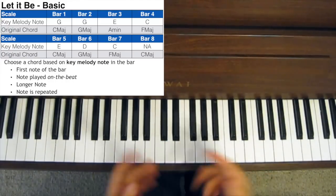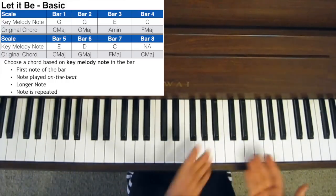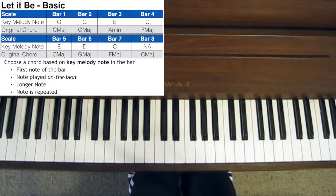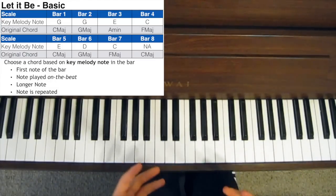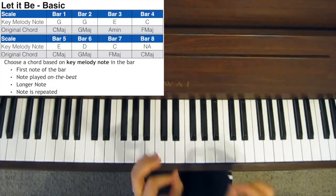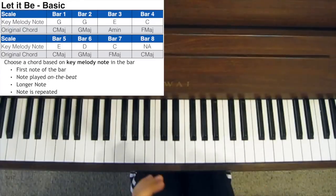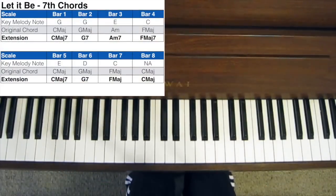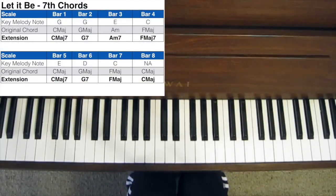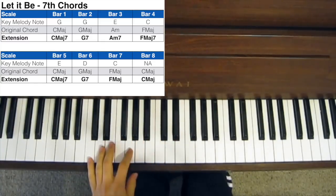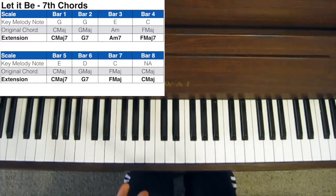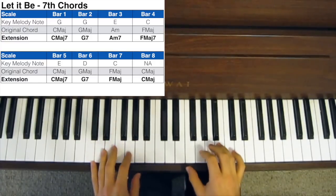You can see I've written out what I think are the key melody notes for each bar. Now, the first thing you can do to make a song slightly more jazzy is to turn all the triads into seventh chords. Let's hear how that sounds.